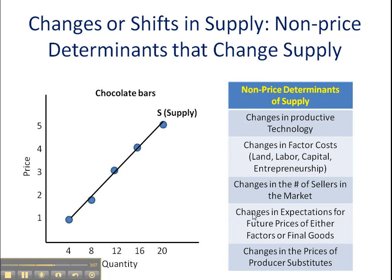If firms expect changes in factor costs, that will cause them to either back off on their production or increase it. Similarly, if they're expecting the price of whatever they're producing to change in the market, that likewise could impact their supply. Finally, changes in the prices of producer substitutes: if a firm can produce two closely related goods — like sedans or 4x4s — and the price of 4x4s goes up, we'd expect the firm to cut back on sedan production and produce more 4x4s, since they'll make more money from those sales. So changes in those related goods will cause supply to change.